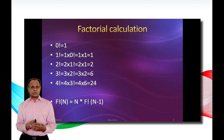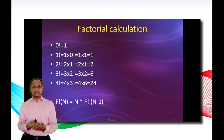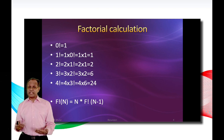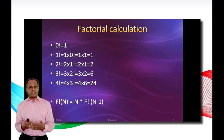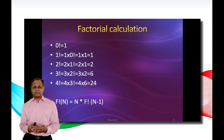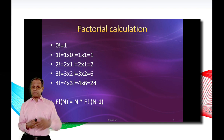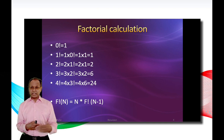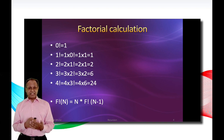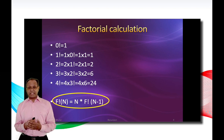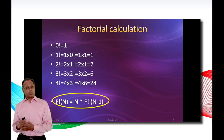Three factorial equals 3 times 2 factorial, which equals 3 times 2, which equals 6. This goes on for 4 factorial, 5 factorial, etc. As you can see, we use the result of the previous factorial to calculate the next factorial. So in general we can say that n factorial is n times (n minus 1) factorial.